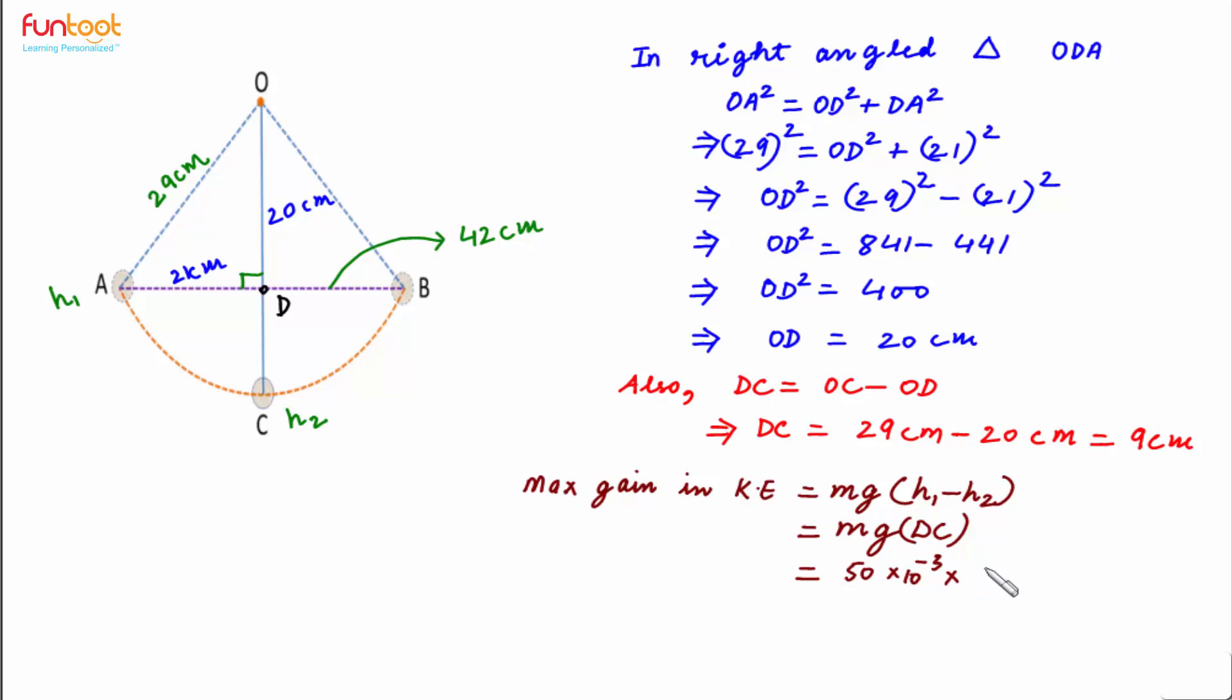G is 9.8 meters per second squared multiplied by DC. DC is 9 centimeters, converting this into meters. This will become 9 multiplied by 10 to the power minus 2, and the units will be Joules. So when this is simplified, this will come as 441 multiplied by 10 to the power minus 4 Joules.